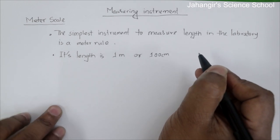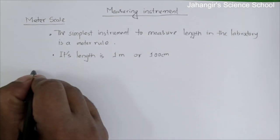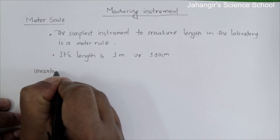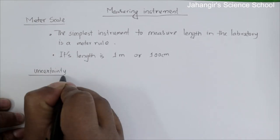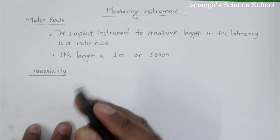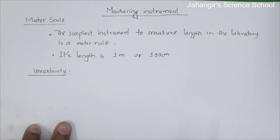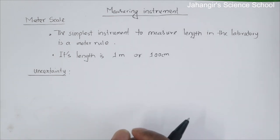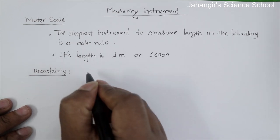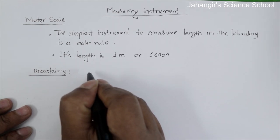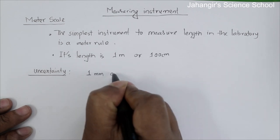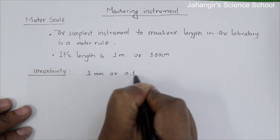The uncertainty of the meter rule — the minimum value we can measure accurately with an instrument is called its uncertainty. The uncertainty of the meter rule is one millimeter, or 0.1 centimeter.